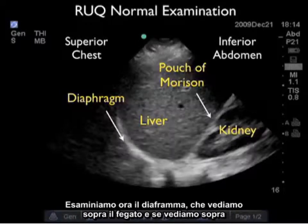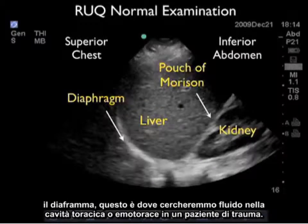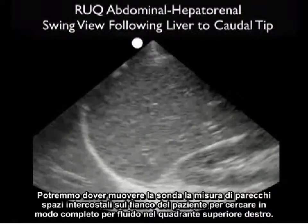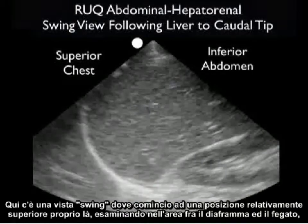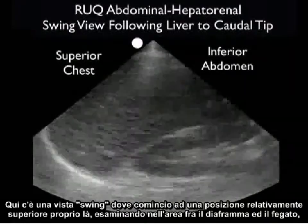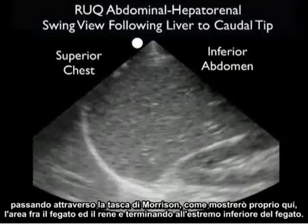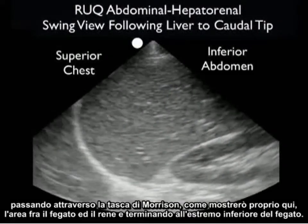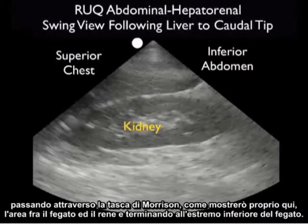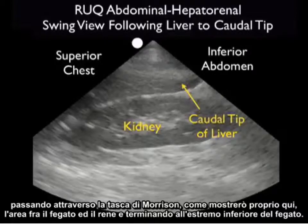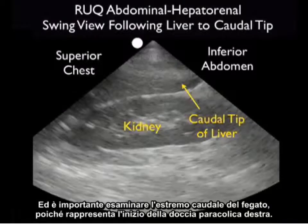Let's now look at the diaphragm, which we see above the liver, and if we look above the diaphragm, this is where we would look for fluid within the chest cavity, or hemothorax, in the trauma patient. We may have to move the probe several intercostal spaces on the patient's side to fully investigate the right upper quadrant for fluid. Here's a swing view where I'm starting relatively superior, looking at the area between the diaphragm and the liver, going through Morrison's pouch, the area between the liver and the kidney, and terminating at the inferior tip of the liver. Notice here we see the caudal tip of the liver extending almost all the way inferiorly down past the inferior pole of the kidney, and it's important to look at that caudal tip of the liver as it represents the beginning of the right pericolic gutter.